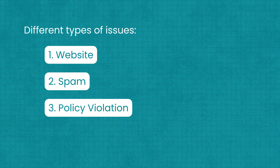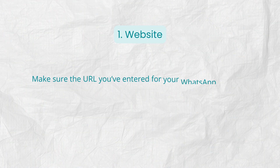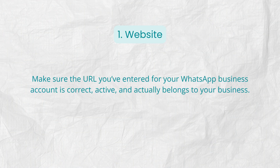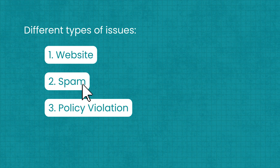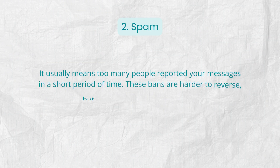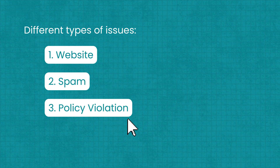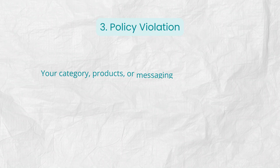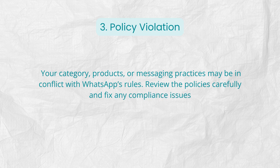The notice could mention different types of issues. If it's related to your website, make sure the URL you've entered for your WhatsApp business account is correct, active, and actually belongs to your business. If it's flagged as spam, it usually means too many people reported your messages in a short period of time — these bans are harder to reverse, but you can still request a review. If it's a policy violation, your category, products, or messaging practices may be in conflict with WhatsApp's rules. Review the policies carefully and fix any compliance issues.